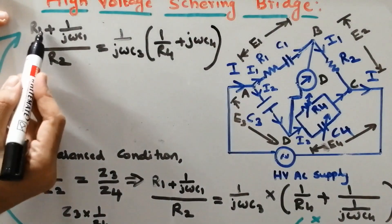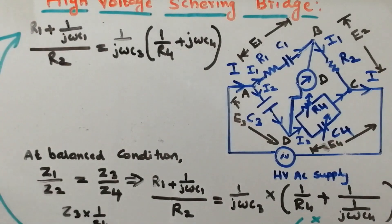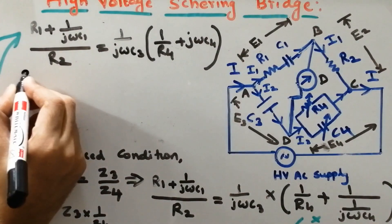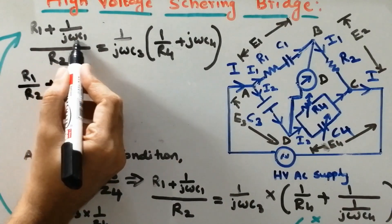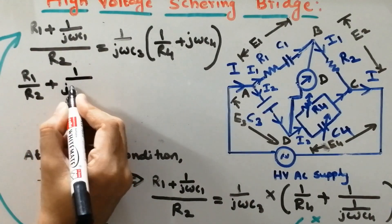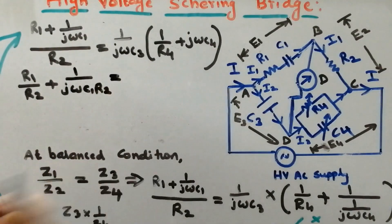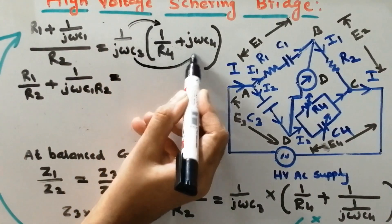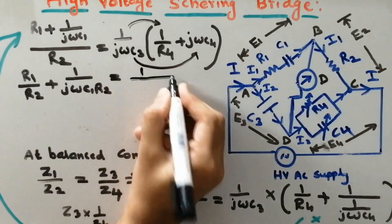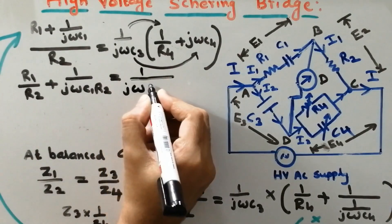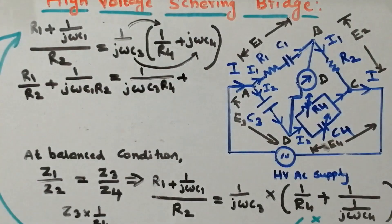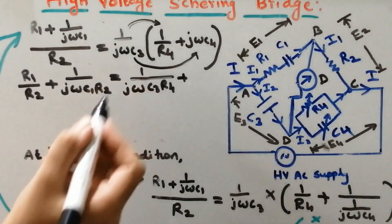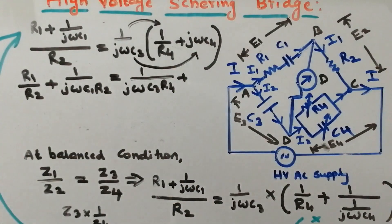Now let me split the terms. We can write (a + b)/c = a/c + b/c. In the same manner, we can split: R1 by R2 plus 1 by jωC1·R2. That equals 1 divided by jωC3·R4 plus C4 divided by C3, since the jω terms cancel.